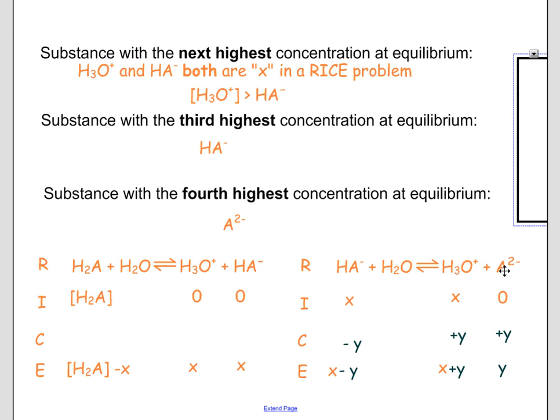There's a second equilibrium going on. Some of that monoanion, the HA minus, is going to form hydronium and the negative 2 ion. If we get rid of some of our HA and we form these two, we're going to end up with a tiny little bit of A2 minus. Tiny because this has a very small equilibrium constant. And a little more hydronium than HA minus.